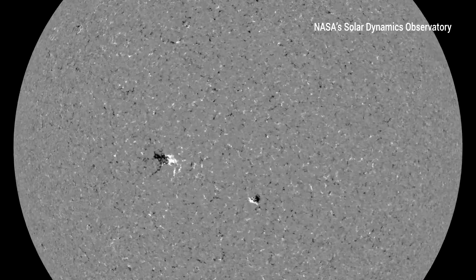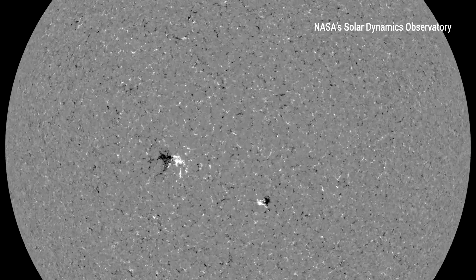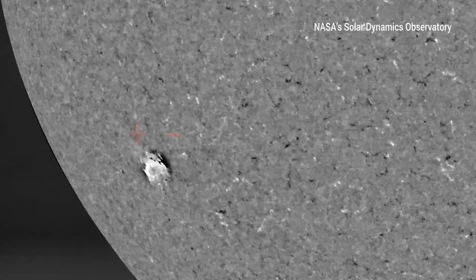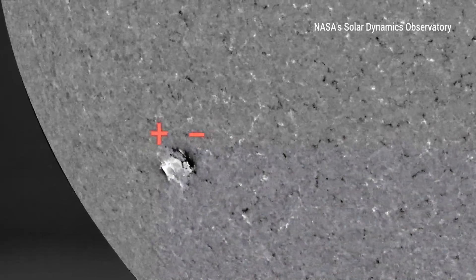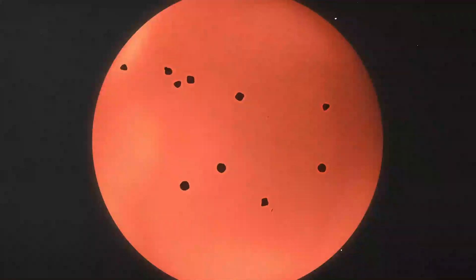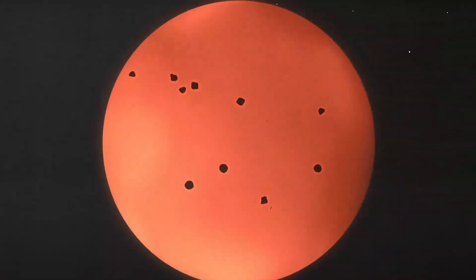This black and white image of the sun shows the magnetic field on the surface. Most sunspots appear in pairs. Like a magnet, one side is positive and the other is negative. After they form, they gradually disappear again.